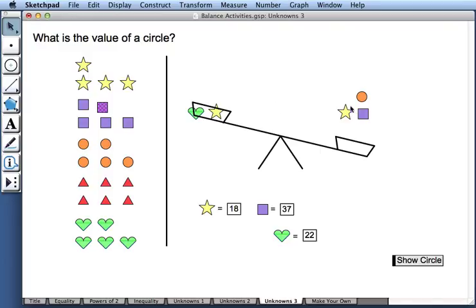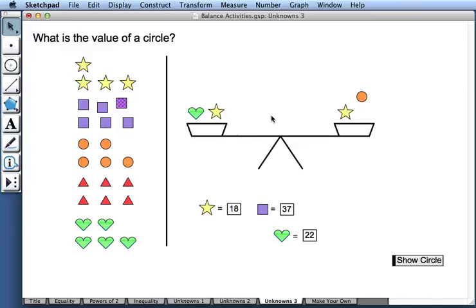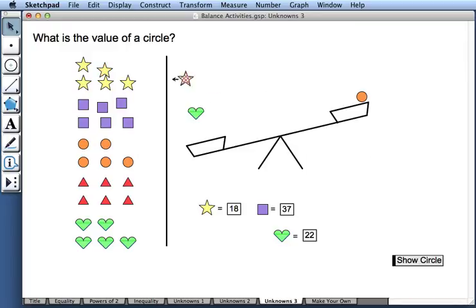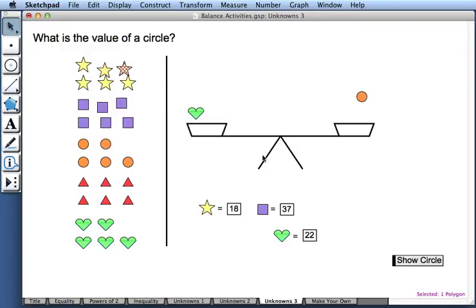So if I take a square off the left side of the balance, I can also take a square off the right side so that both sides are now equal. And similarly, I can remove a star from both sides. This allows me now to figure out the value of the circle.